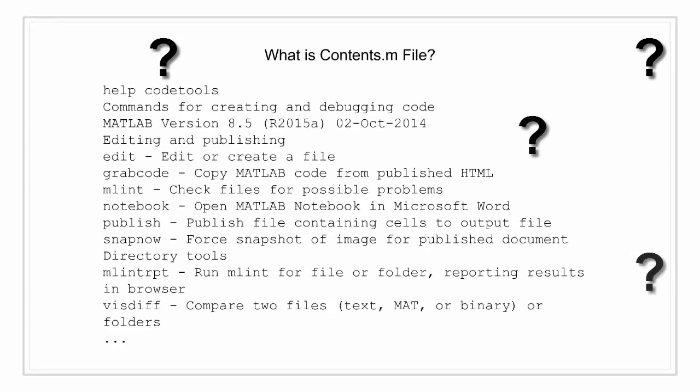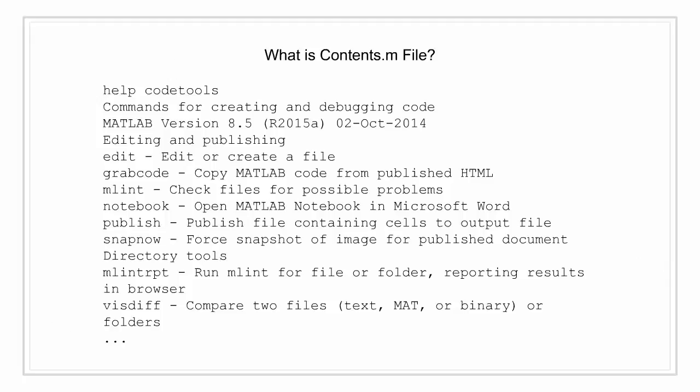Moving on to the third section: I will explain what a contents.m file is and how it provides a summary of the programs in your folder. A contents.m file lives in your code folder and provides a summary of all programs in that folder. Commands such as help, doc, and version refer to the contents.m file to display information about the folder. The file contains only comment lines — the first two lines are headers describing the folder, and subsequent lines list program files with descriptions. It also allows you to group files into categories with category descriptions.